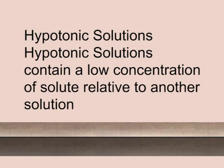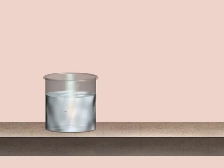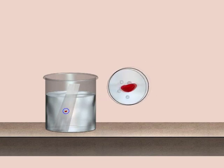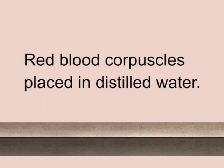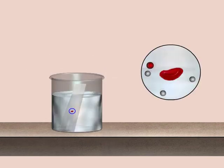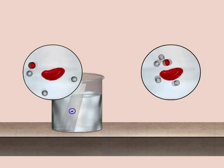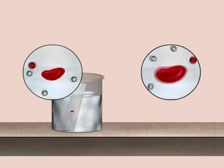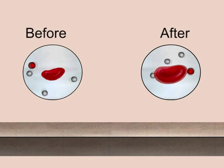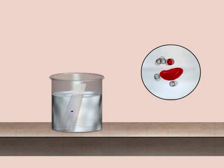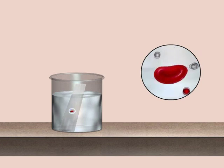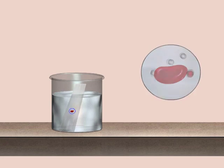Hypotonic solutions contain a low concentration of solute relative to another solution. One example is red blood corpuscles placed in distilled water. When a red blood corpuscle is placed in a hypotonic solution, water flows into the cell and the cell swells or bursts. When a cell is placed in a hypotonic solution, the water diffuses into the cell, causing the cell to swell and possibly explode.